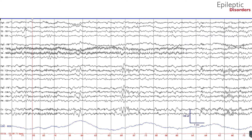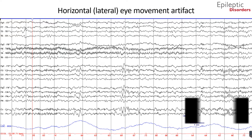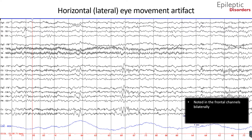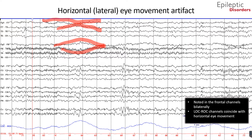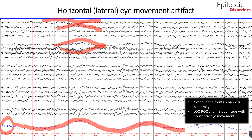Another important artifact to recognize is horizontal lateral eye movement artifact. This is noted in the frontal eyelids, with eyes moving horizontally and slowly. This is best noted in the FP1, F7, and F7-T3 on the left chains, and FP2, F8, and F8-T4 on the right chains. Another feature is eye roving movements, shown below in the LOC/ROC channels circled in red. LOC/ROC stands for left outer canthus and right outer canthus, where the undulating waveforms noted on those channels coincide with the horizontal lateral eye roving movements noted on this page.